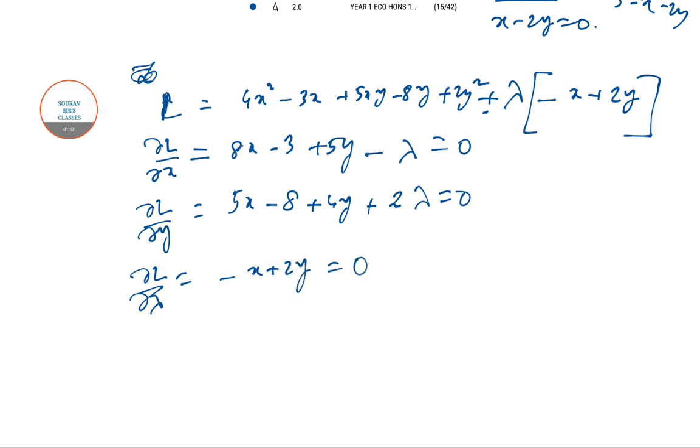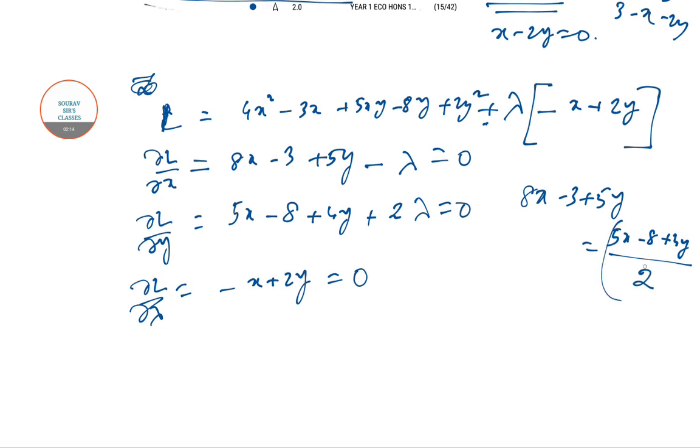This is equal to 0. And del L del lambda, there's a third one which is minus x plus 2y equal to 0. All you have to do is equate these two lambda values.